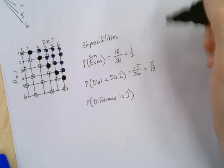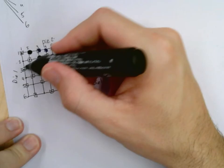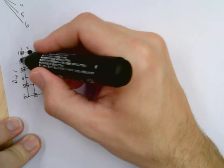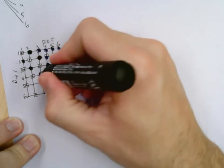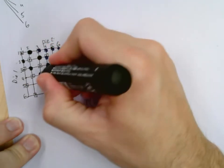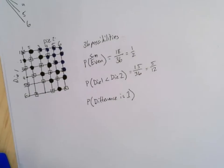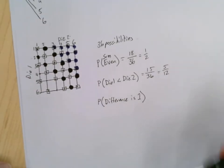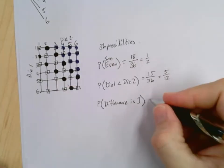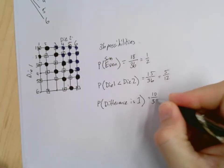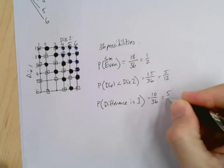Now remember, we've got to do the other side too, because it just says the difference is one. So, let's see, two minus one right here. Three minus two, four minus three. And again, in that pattern, all the way down to six minus five. And you'll note that we have a total of ten out of thirty-six, or five out of eighteen.